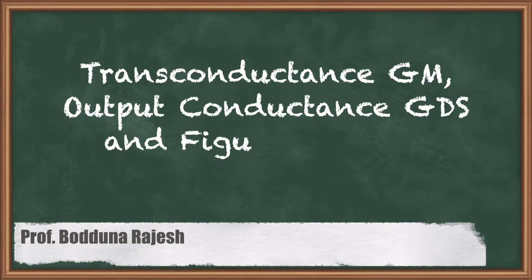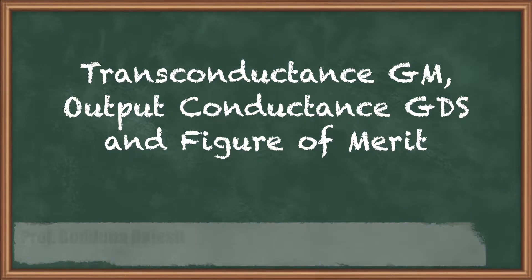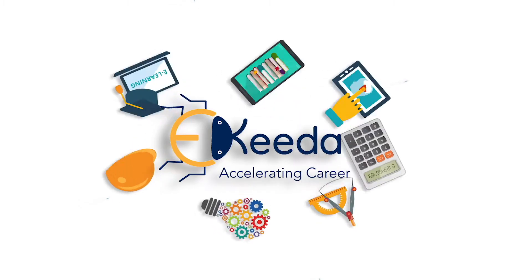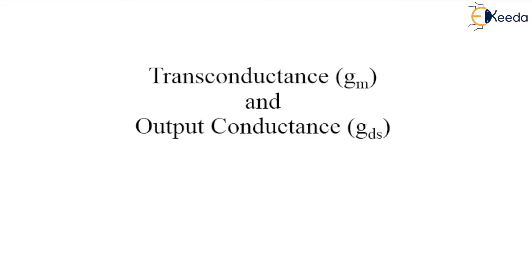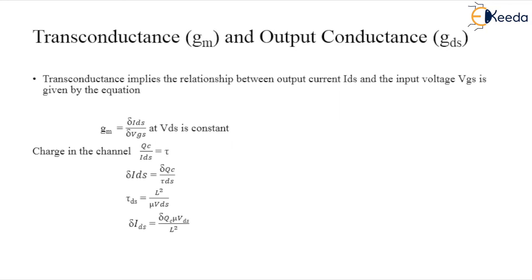Today's class is about transconductance gm and output conductance gds. These are MOSFET parameters — n-channel metal oxide semiconductor field effect transistor parameters. We are going to find out the transconductance and output conductance in an n-channel MOSFET using mathematical analysis.